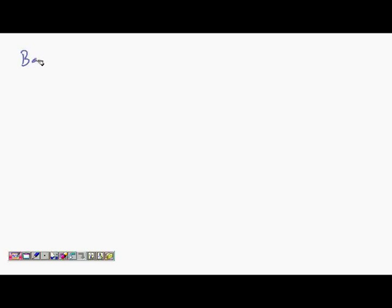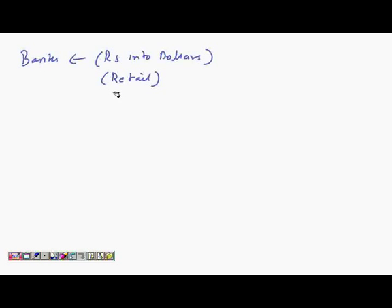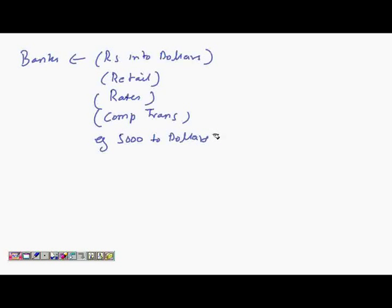For example, if you go to a bank to convert rupees into dollars — a retail transaction — you ask for the prevalent rate and complete the transaction. If the rate is USD = 50 INR and you convert 5,000 rupees, you get 100 dollars. At a retail level, this is settled on the same day.